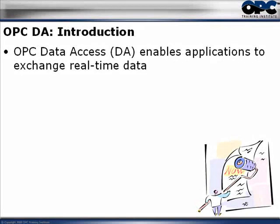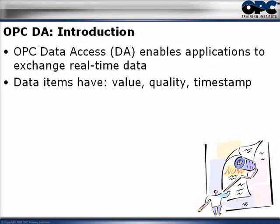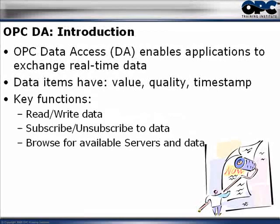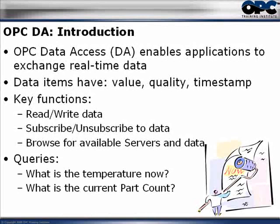The most popular OPC specification is the OPC Data Access specification, which enables applications to communicate and pass real-time data. Every item has information on the value, the quality, and the timestamp. OPC allows you to read, write, subscribe, and unsubscribe. One of the most powerful features is its ability to browse for available OPC servers and then auto-discover what data is available inside each one.